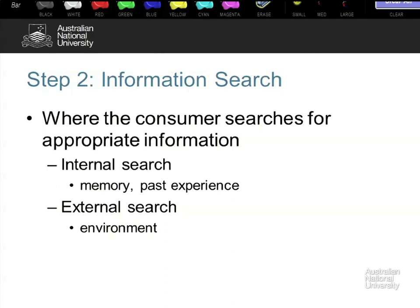The external search can be controlled deliberately — you go out and say 'I want to find what is available, I'm in the market for a new laptop, I will intentionally expose myself to marketing messages about laptops, computers, iPads, notepads.' Or you can encounter information passively and it becomes resident in your memory, or you deliberately seek out product demos. There are a whole bunch of different ways the external search function works.